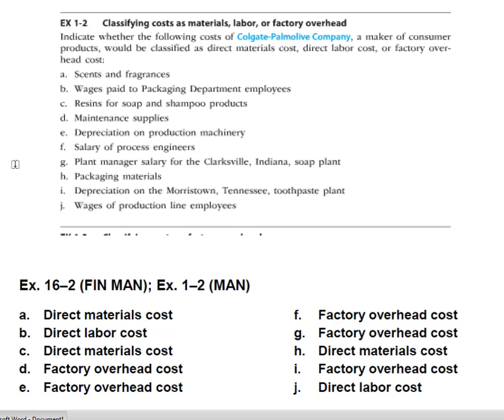Depreciation on the Morristown, Tennessee toothpaste plant — that's going to be factory overhead. And the wages of production line employees — that's going to be a direct labor cost. I hope this has helped you, and keep posting questions.